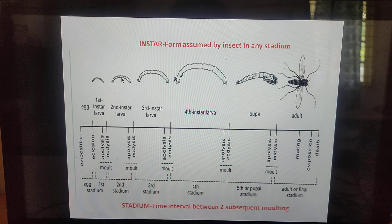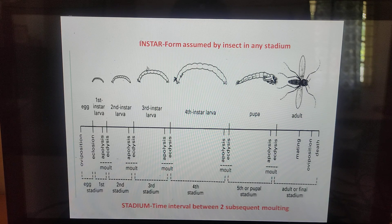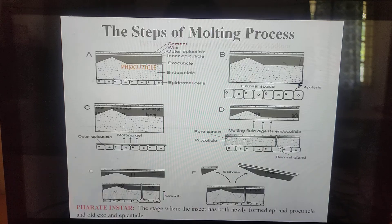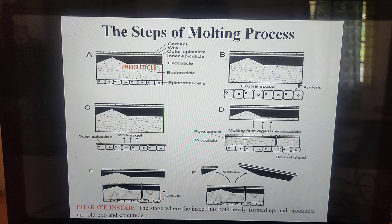The time interval between two subsequent moltings is known as the stadium — this is an important point. The form assumed by the insect in a stadium is known as an instar.